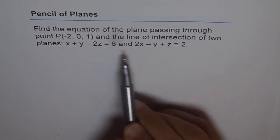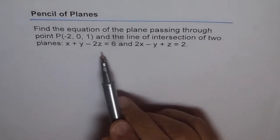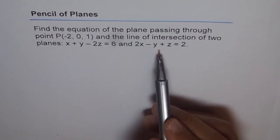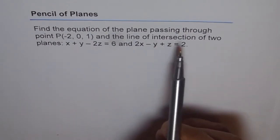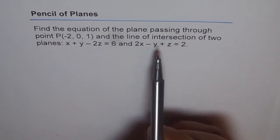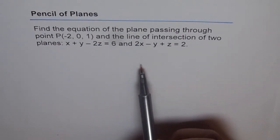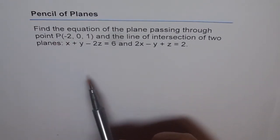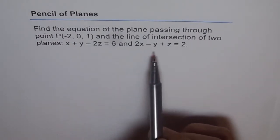We have two planes here, and when two planes are not parallel, they will intersect in a line. We need to find the equation of a third plane which passes through that line and has the point P given on it.